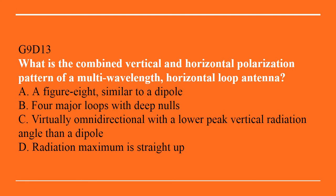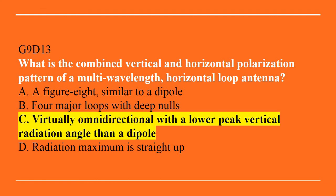G9D13: What is the combined vertical and horizontal polarization pattern of a multi-wavelength horizontal loop antenna? A. A figure-8 similar to a dipole. B. Four major loops with deep nulls. C. Virtually omnidirectional with a lower peak vertical radiation angle than a dipole. Or D. Radiation maximum is straight up. The answer is C — virtually omnidirectional with a lower peak vertical radiation angle than a dipole.